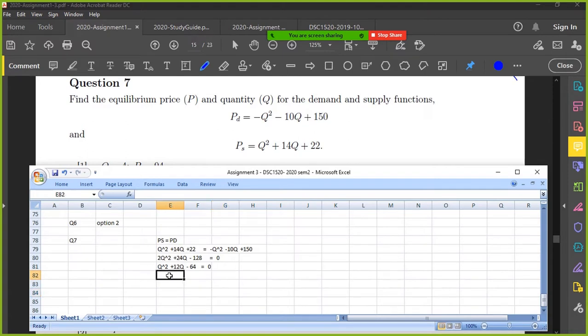Okay, so I'm going to work out brackets. I'm factorizing the trinomial. I'm going to have Q plus 16 and Q minus 4. Minus 4, yes.